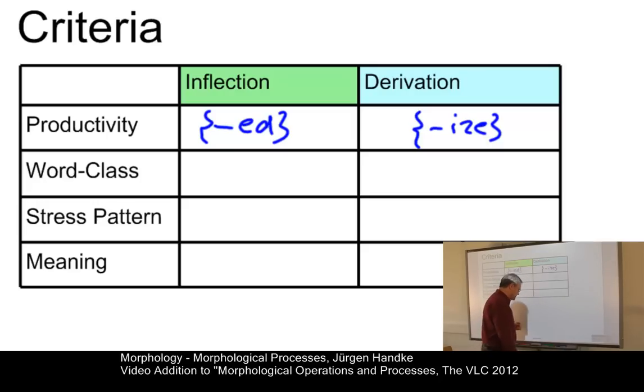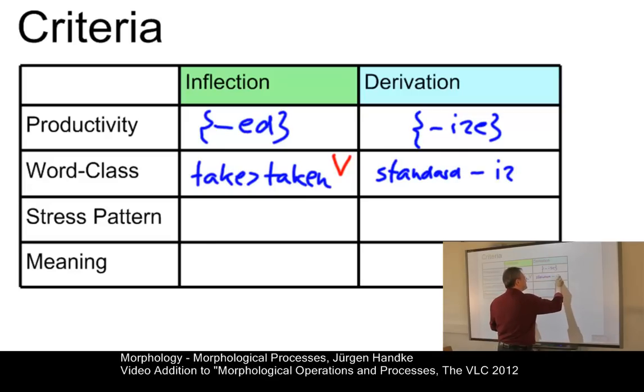The next criterion concerns the stability of the word class. Well, in inflection, the word class is not changed. So, if we take something like take and taken, well, in both cases, we have a verb. Whereas, in derivational processes, if we take standard and standardize, we immediately see we have a noun here, but the whole thing becomes a verb. We have to be careful, though. The word class does not necessarily have to change, but it may change in derivational processes. In inflectional processes, the word class never changes at all.